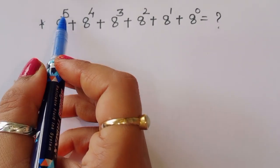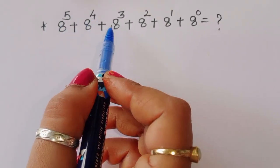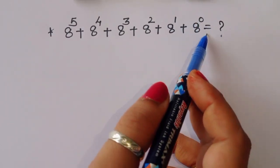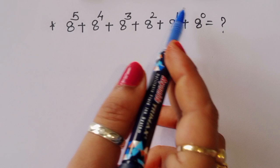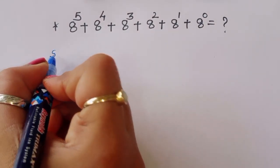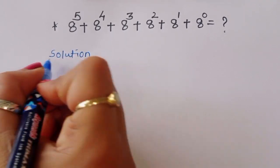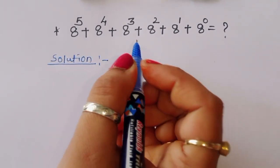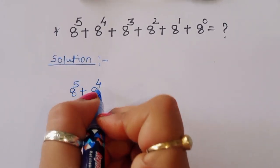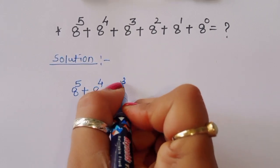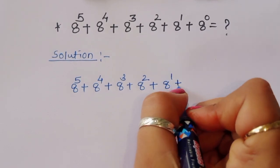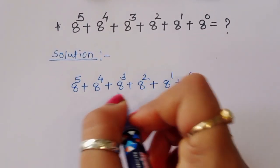The question is: 8 power 5 plus 8 power 4 plus 8 power 3 plus 8 power 2 plus 8 power 1 plus 8 power 0 is equal to what? So we have to find out the value of this term. Let's see the solution.